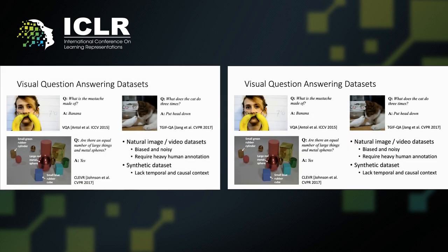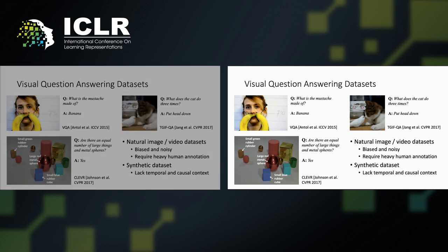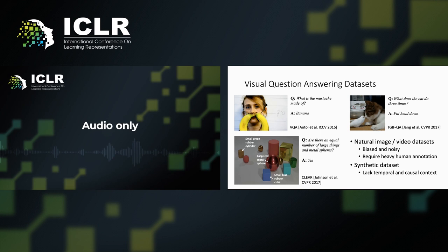Recently, there has been a lot of efforts on building datasets for visual question answering on both static images and videos. Despite these huge progresses, these datasets are either biased and noisy, requiring heavy human annotations, or they lack complex causal and temporal contexts.